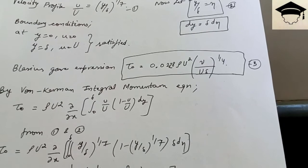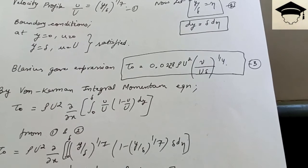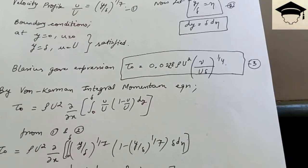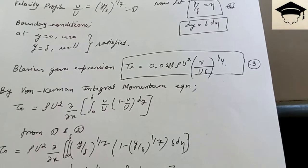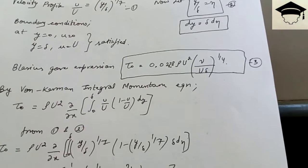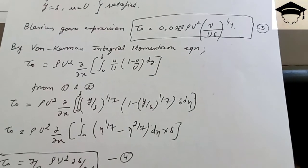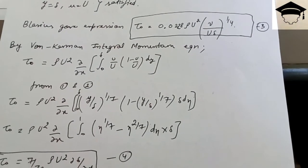Solving the integration gives (7/72) ρU² dδ/dx. So we now have τ₀ = (7/72) ρU² dδ/dx.